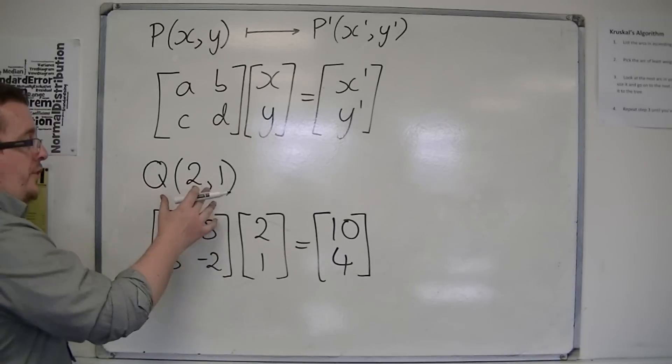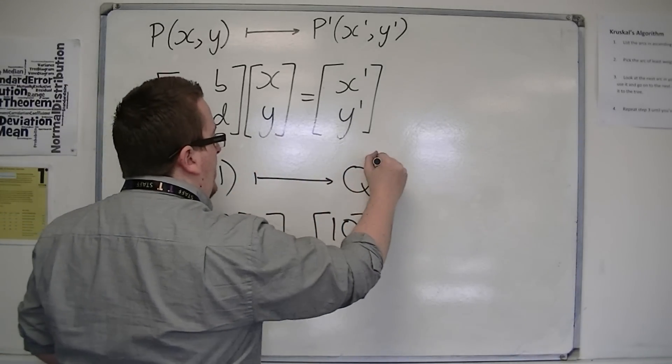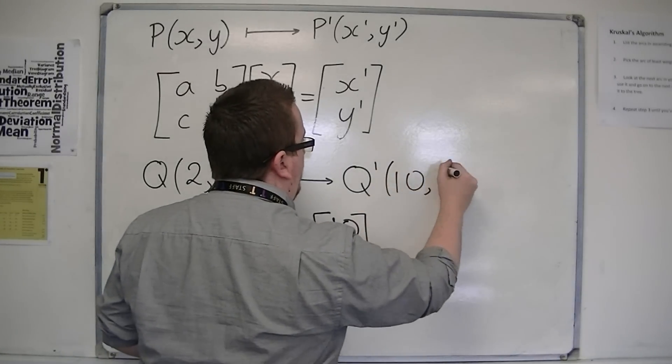And so the coordinates 2, 1 get mapped to another set of coordinates by this matrix, which is now 10, 4.